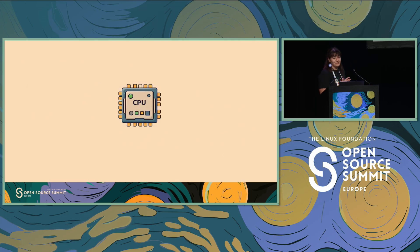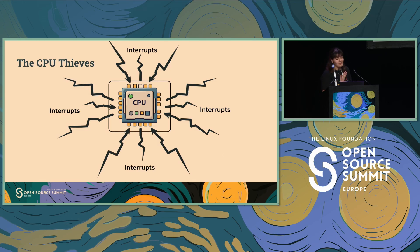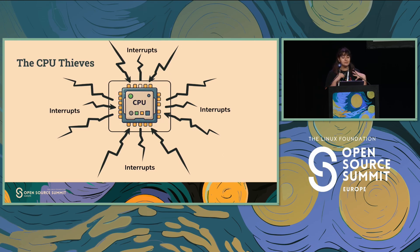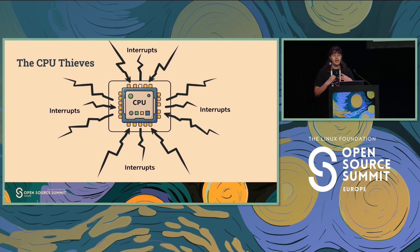This is the CPU. These are the CPU thieves. Every time a network card gets a packet or a disk finishes a read, it sends an interrupt signal that forces the CPU to stop what it was doing and focus on something else. And if this happens thousands of times per second, the CPU is constantly distracted, even if it's not busy in a traditional sense.